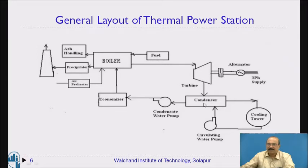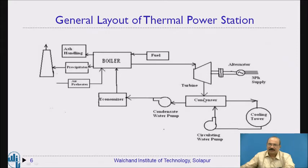In the condenser, the steam coming at higher temperature is condensed back to normal temperature using cold water. This cold water is recycled through the cooling tower. There may be one or multiple cooling towers depending on the plant capacity. We recycle this water because it is required in huge quantities. After condensation, the steam becomes pure water, and this pure water is sent back to the boiler.